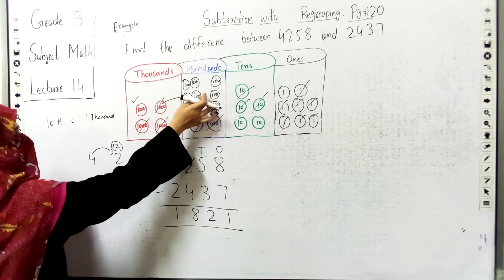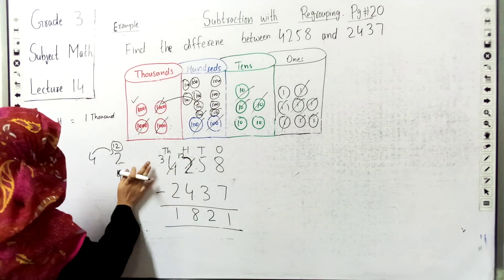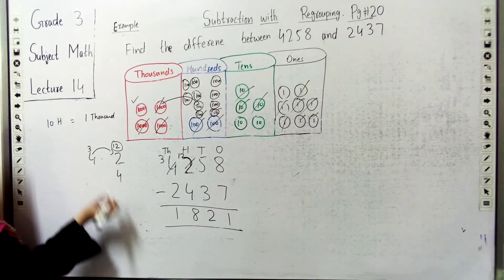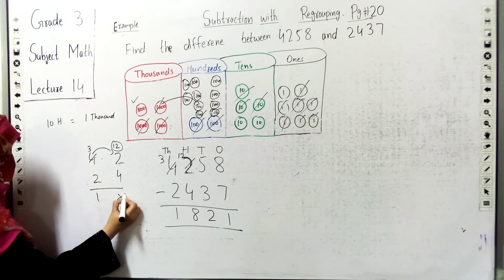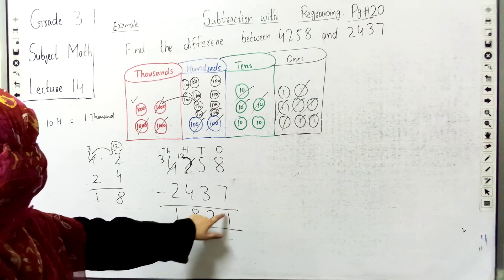So we had 2 plus 10 equals 12 in the hundreds place. Then 12 minus 4 equals 8. Finally, 3 minus 2 equals 1 in the thousands place. So the answer is 1,821.